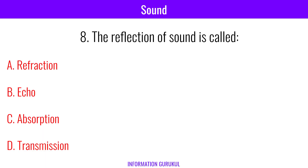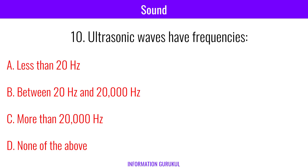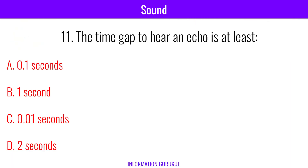The reflection of sound is called echo. Loudness of sound is measured in decibel. Ultrasonic waves have frequencies more than 20,000 Hertz. The time gap to hear an echo is at least 0.1 seconds.